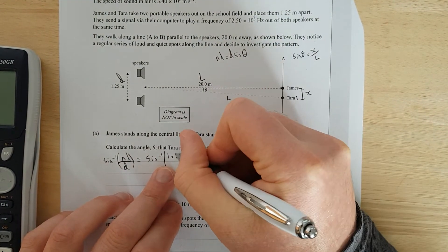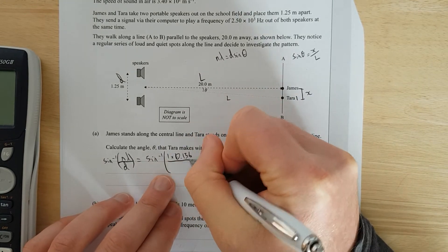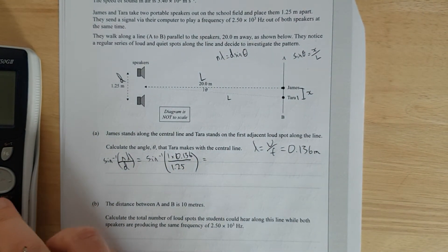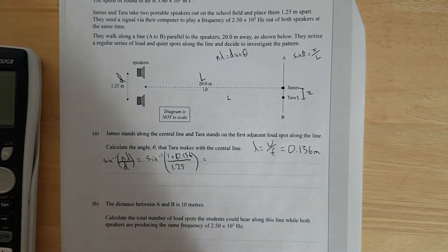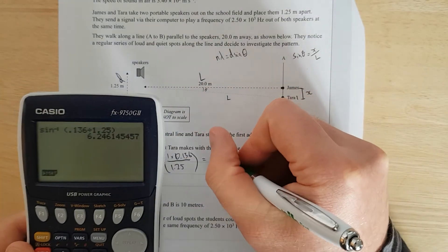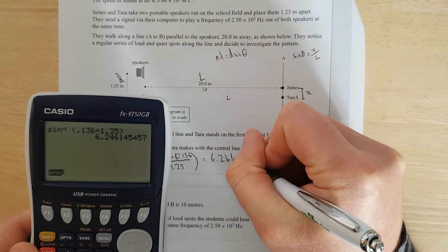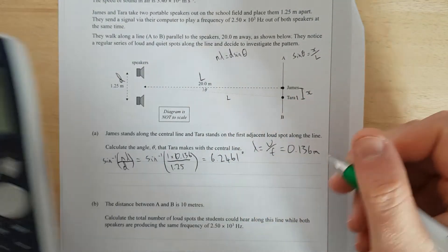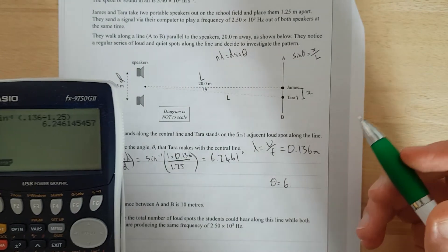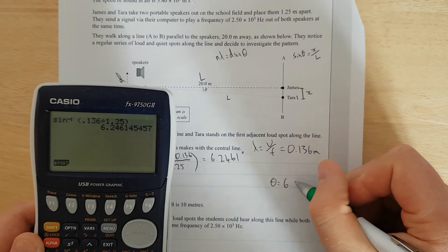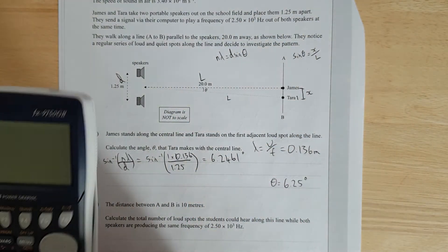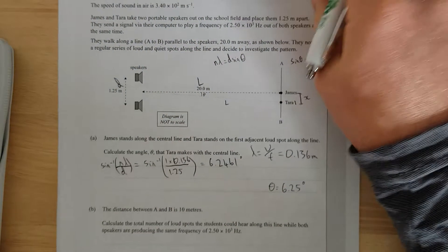1 times 0.136 over the separation distance is 1.25. We make sure our calculator is in degrees. Shift setup, it's in degrees. Let's calculate that, and that gives me 6.24. Let's go 6.2, fully unrounded for us: 6.2461 degrees. So theta down here equals 6.25 degrees. Everything's in 3 significant figures.